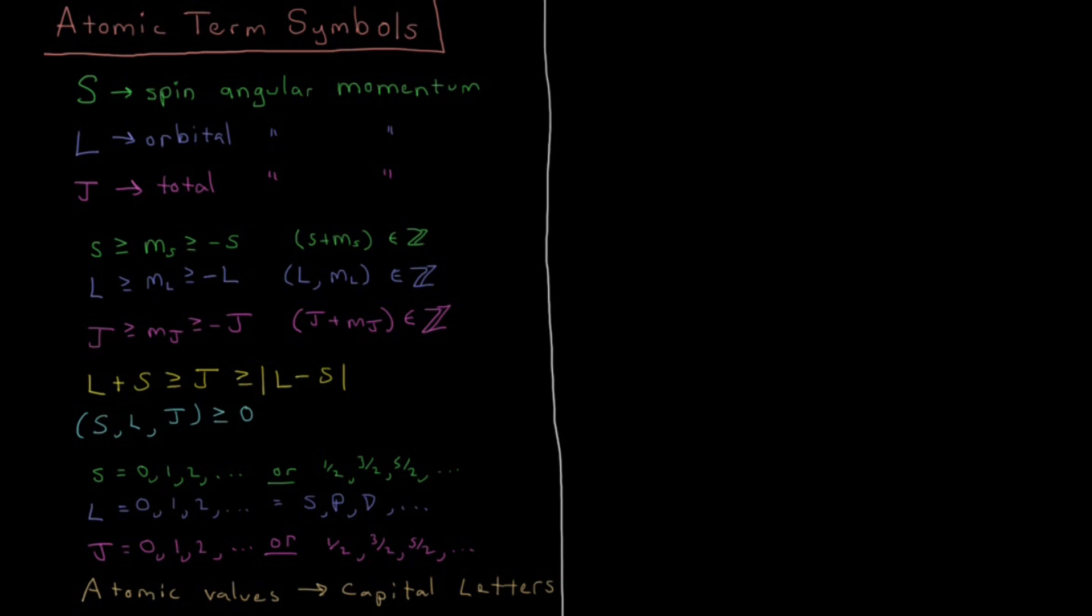Let's now revisit the same types of terms that we looked at for the hydrogen atom, but now generalize that to general atomic term symbols. So we've got three angular momentum quantities here, quantum numbers.